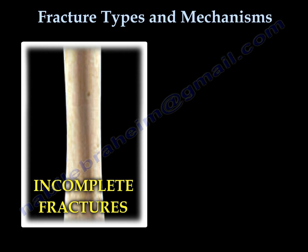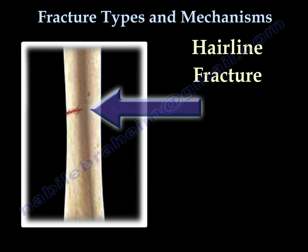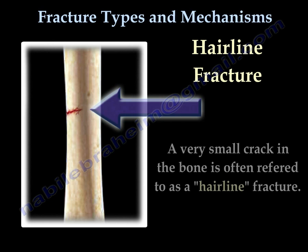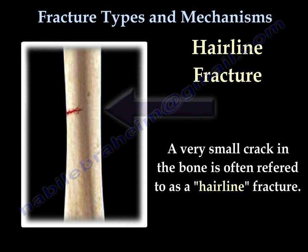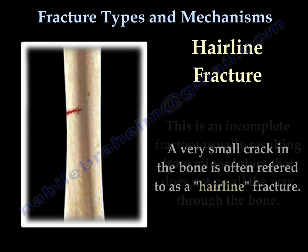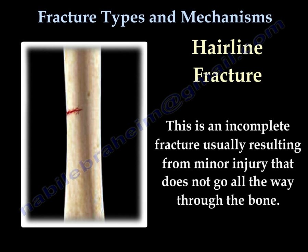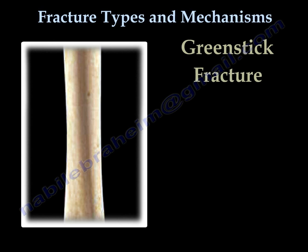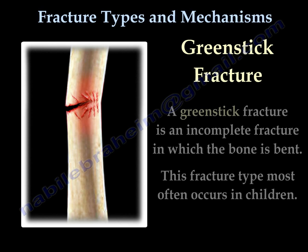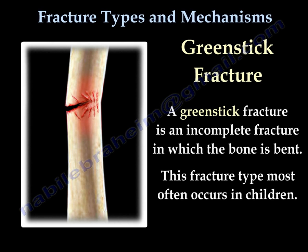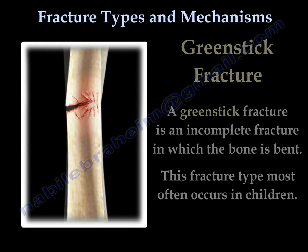Incomplete fractures. A hairline fracture is a very small crack in the bone. This is an incomplete fracture usually resulting from minor injury that does not go all the way through the bone. Another type of incomplete fracture is the greenstick fracture. This is an incomplete fracture in which the bone is bent, and this type most often occurs in children.